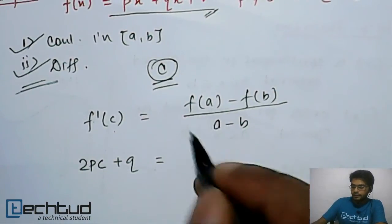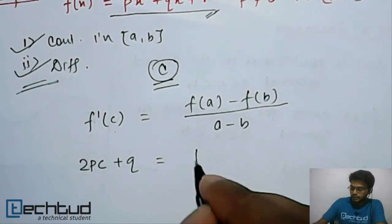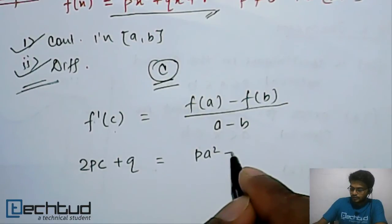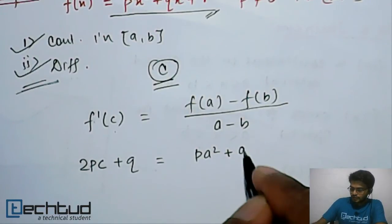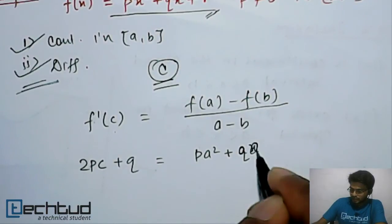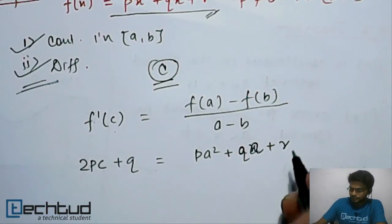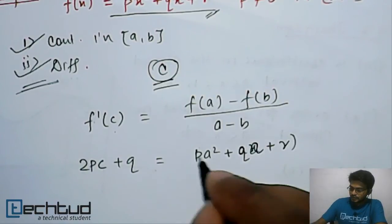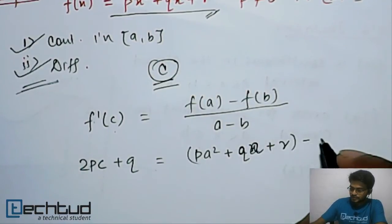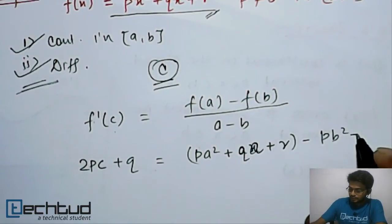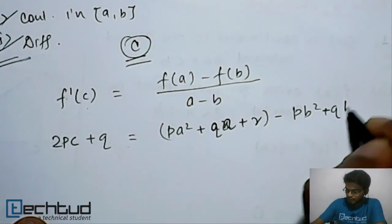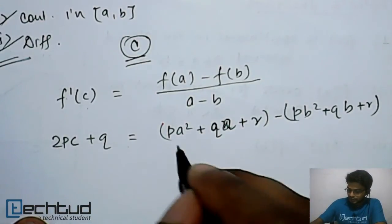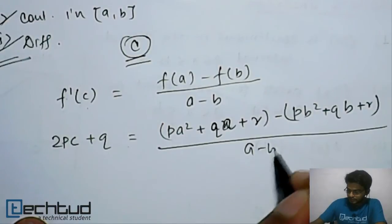If we put the value of a in the function, it will become pa² + qa + r, minus pb² + qb + r, upon (a - b).